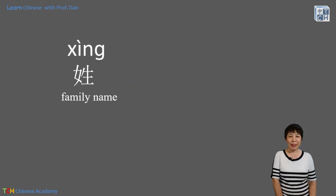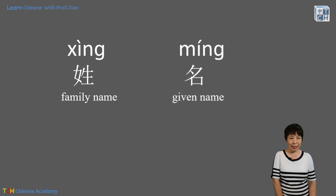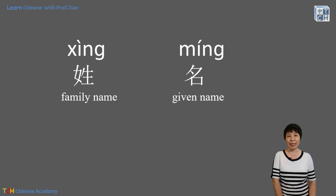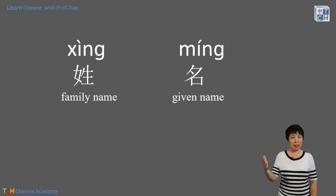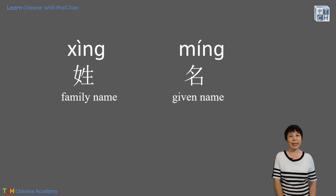In Chinese, our family name, 姓, comes first. And then the given name, 名, comes second. It's not like the English name — your first name, the given name, comes first. It's just the opposite. We say we respect and honor our ancestors a lot, and that's why the family name comes first.